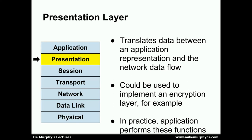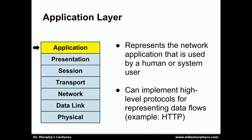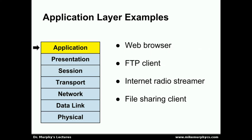Instead, the application layer talks directly to the transport layer. The application layer is the network application itself — the application that a human or system user is using to perform some task that requires network connectivity. The application layer can implement its own high-level protocols for sending and receiving data. A good example is the Hypertext Transfer Protocol, or HTTP, which makes the World Wide Web function. Examples of application layer implementations include web browsers, FTP clients, internet radio streaming applications, file sharing clients — basically any application that makes use of network connectivity.